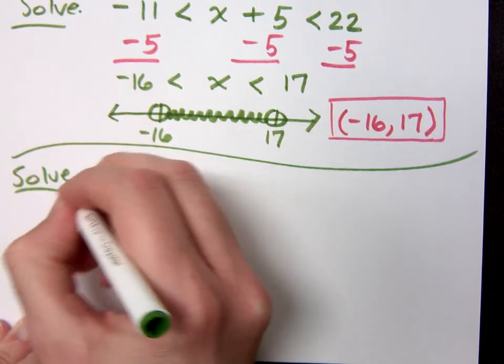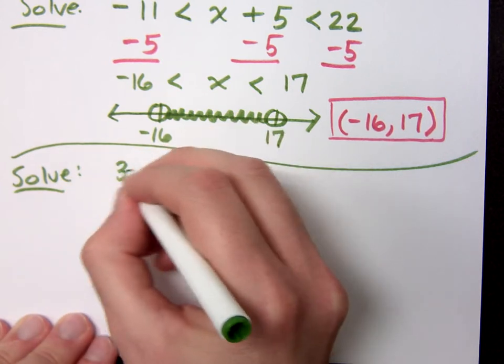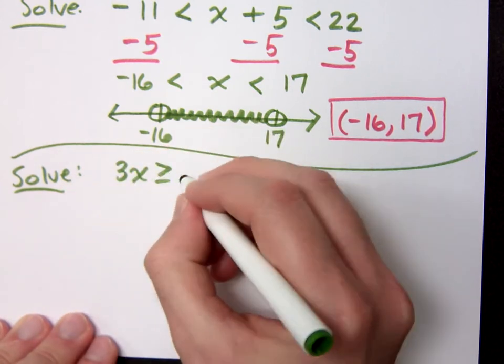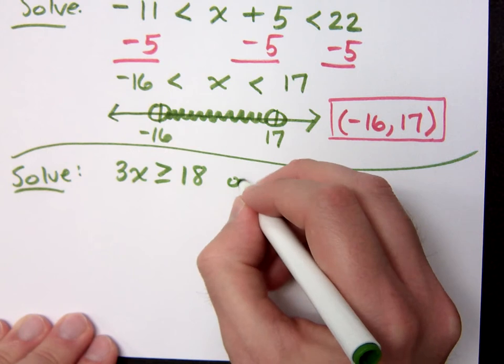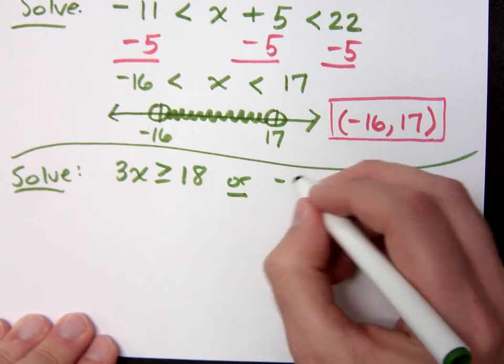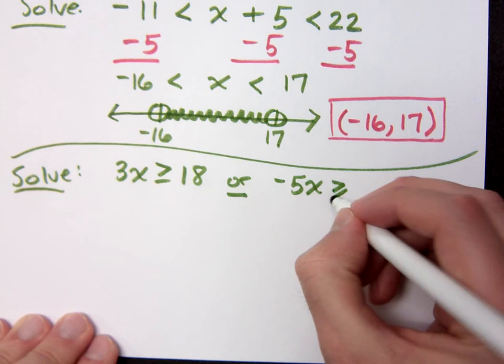Alright, let's try one more. 3x is greater than or equal to 18, or negative 5x is greater than or equal to 20.